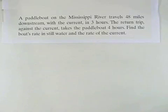A paddle boat on the Mississippi River travels 48 miles downstream with the current in 3 hours. The return trip against the current takes the paddle boat 4 hours. Find the boat's rate in still water and the rate of the current.